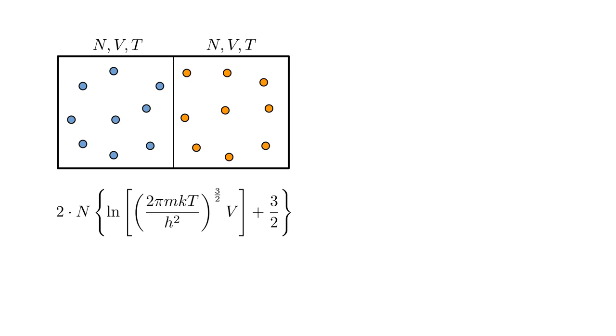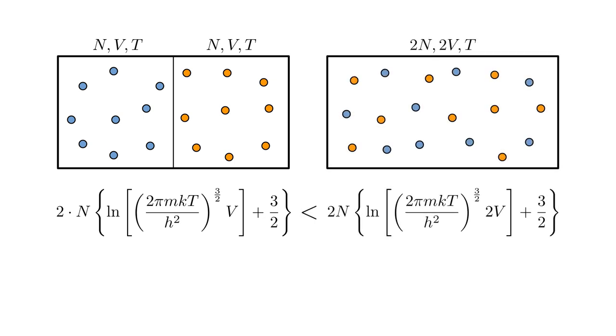We show the atoms colored blue and orange. If we remove the divider, it makes sense that the entropy increases because the distinguishable atoms mix. There would be observable consequences of this. If you were originally surrounded by only blue atoms, you would start to see a mix of blue and orange atoms.